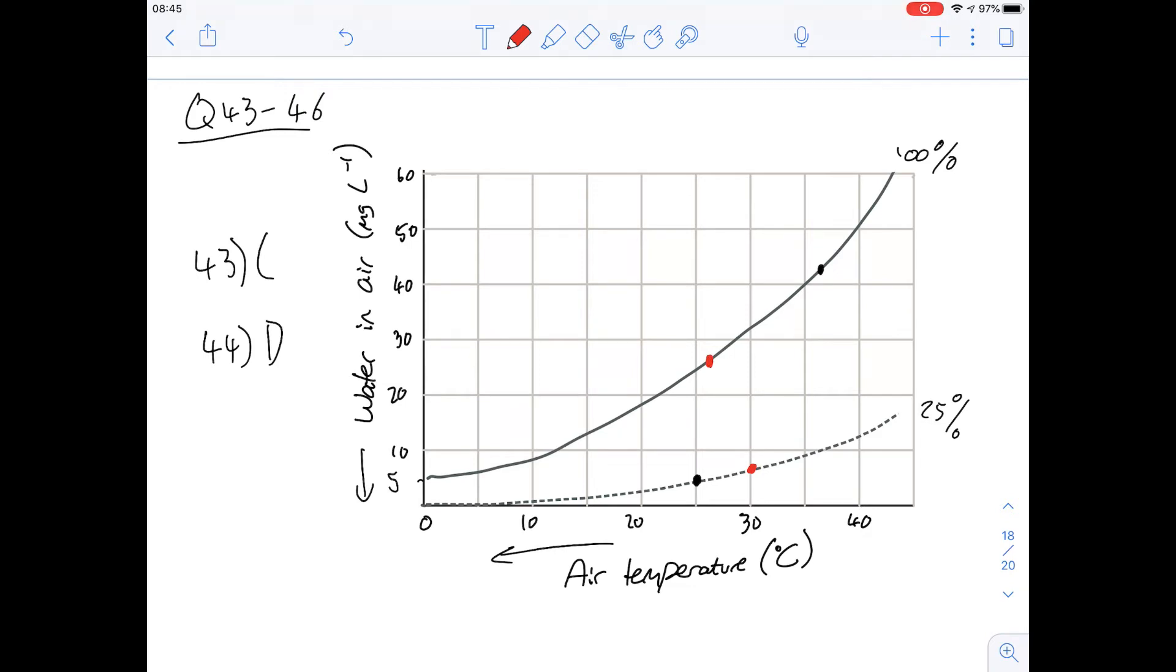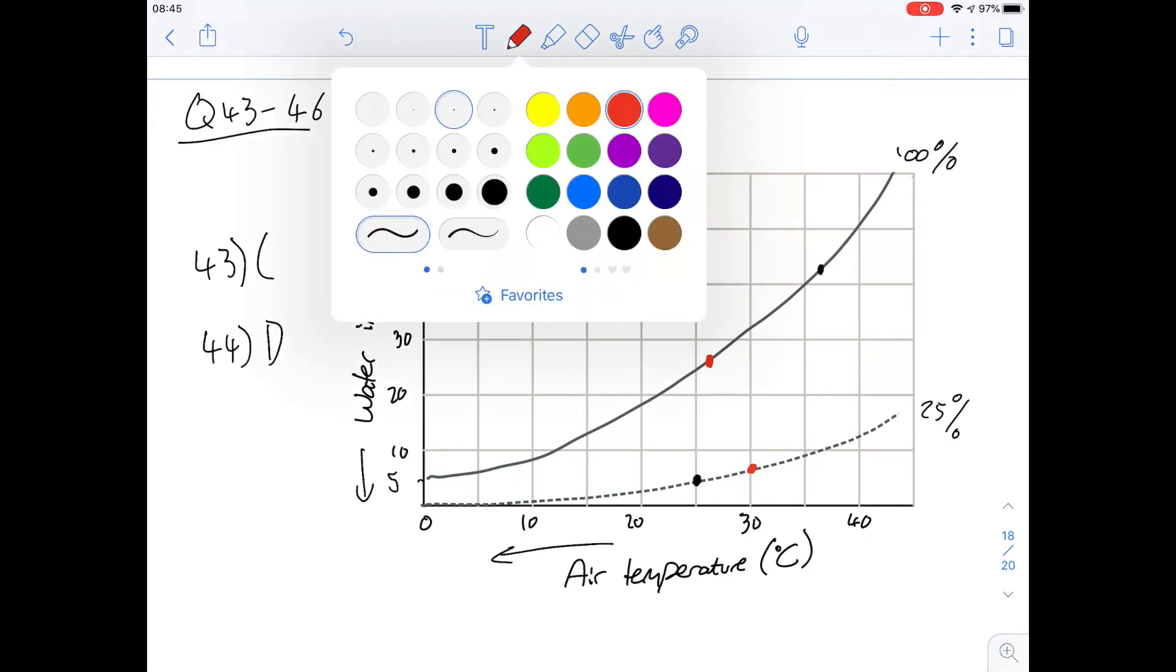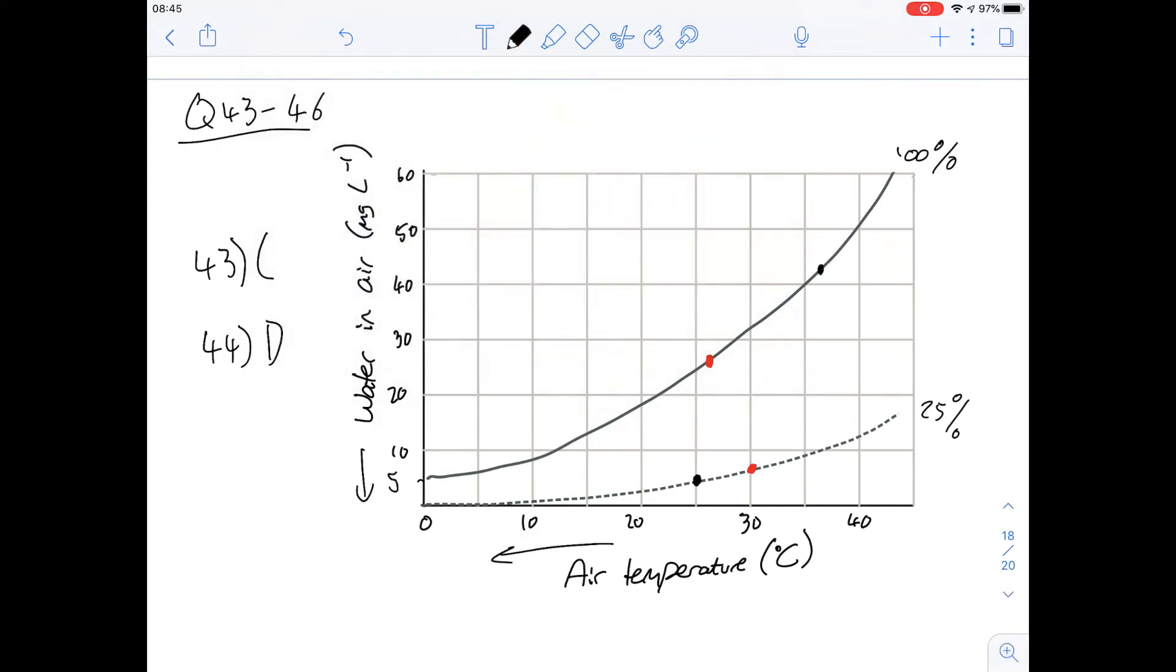Which of the following is closest to the net loss of water from the kangaroo rat for every liter of exhaling air? We're just looking at the difference in the height between these two dots, and to me that looks like around 20 milligrams. It's certainly closer to 20 than it is to anything else, so the answer for this one, question 45, is going to be A.